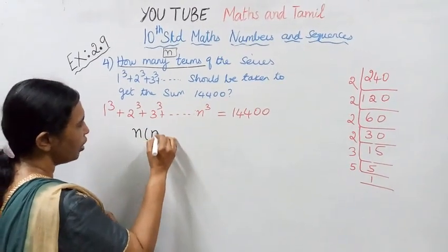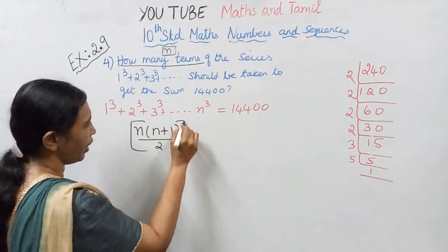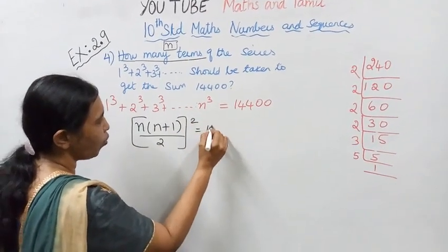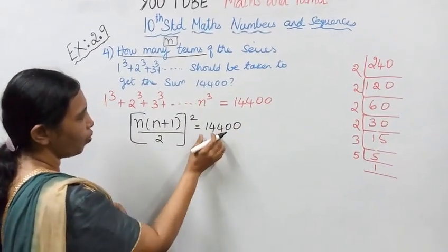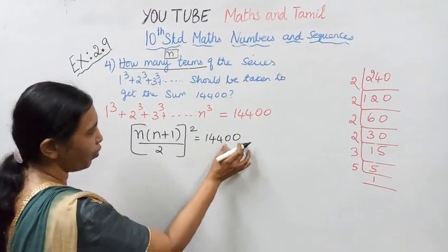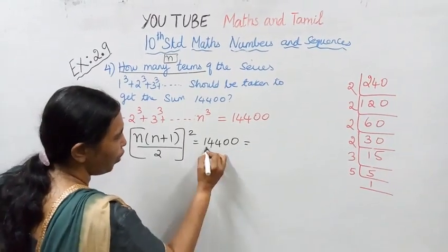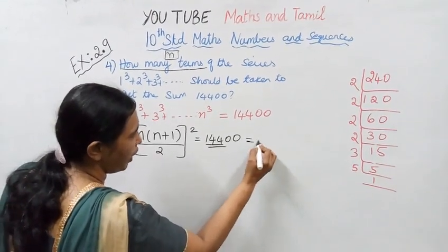The formula is [n(n+1)/2]² = 14400. Now let's simplify 14400. How can we write 14400? 144 equals 12², so 14400 equals (120)².